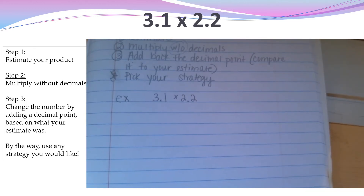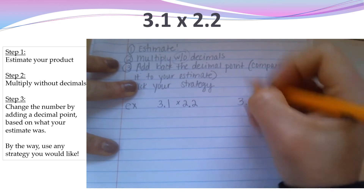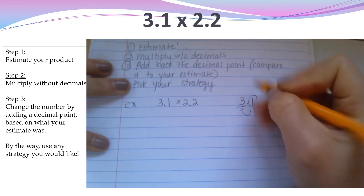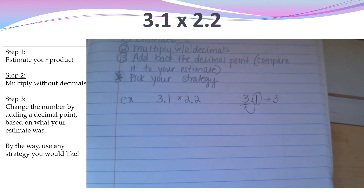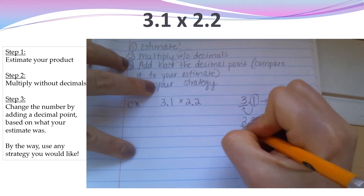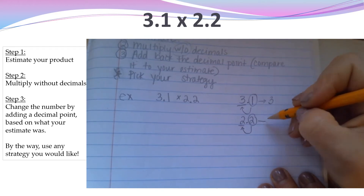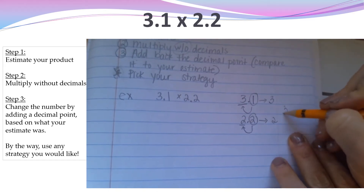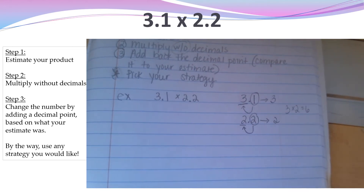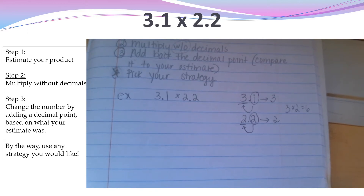Step one is I'm going to estimate. I'm going to round three and one-tenth and two and two-tenths to the nearest whole number. That one-tenth means the three stays the same, so three and one-tenth rounds to three. That two-tenths means the two stays the same, so two and two-tenths rounds to two. So let's find a good estimate: three times two is six, which means three and one-tenth times two and two-tenths is about six. Step one, estimate, is complete.